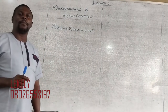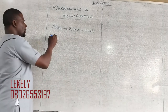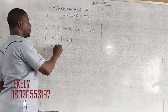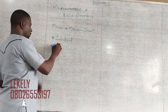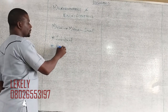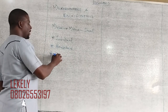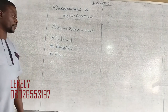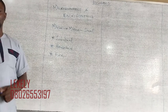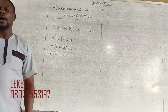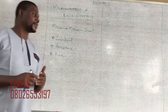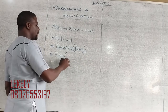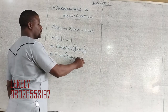Microeconomics deals with the individual, individual household, and firm or organization. It is that type of economics dealing with the individual, household, and firm. When you say household, that is like saying a family. When you say firm, that is one organization — just one company.